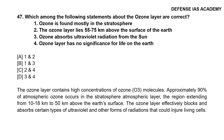Question 47: Which among the following statements about the ozone layer are correct? 1. Ozone is found mostly in the stratosphere; 2. The ozone layer lies 55 to 75 km above the surface of the earth; 3. Ozone absorbs ultraviolet radiation from the sun; 4. The ozone layer has no significance for life on earth. The correct answer is option B, 1 and 3. Approximately 90% of atmospheric ozone occurs in the stratosphere, in the region extending from 10-18 km to 50 km above the earth's surface. The ozone layer effectively blocks and absorbs ultraviolet and other radiations that could injure living cells.